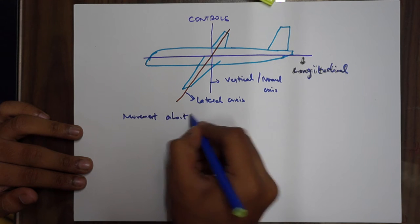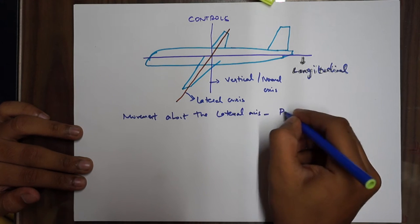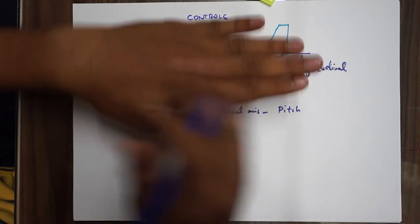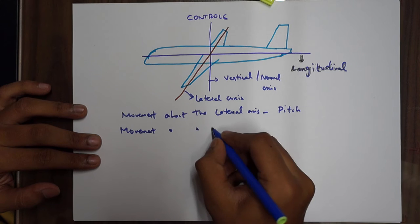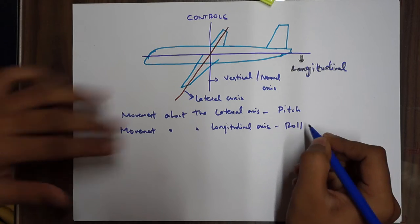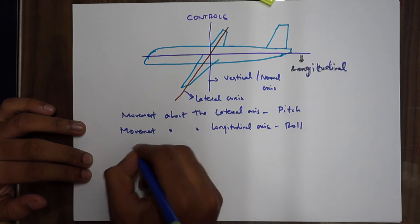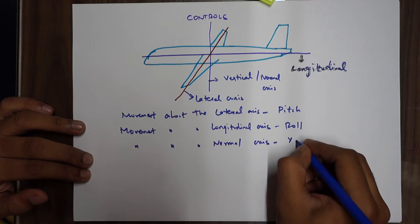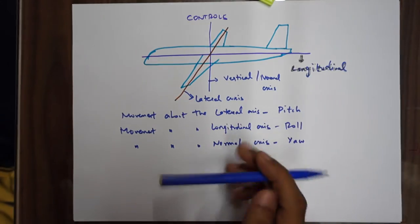Movement about the lateral axis is your pitch — the aircraft moves across its wings. Movement about the longitudinal axis is your roll — left and right through the longitudinal axis. Movement about the normal axis is your yaw — the aircraft moves like this. Yaw.